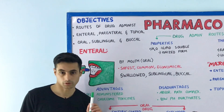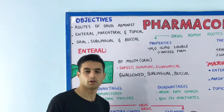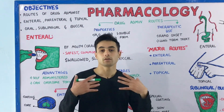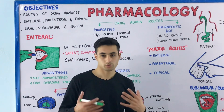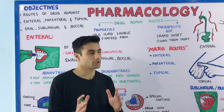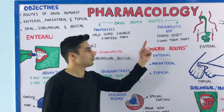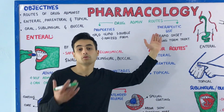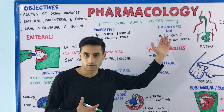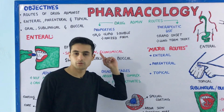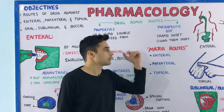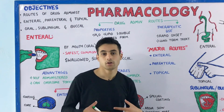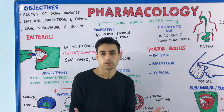When you are taking a drug into your body, the pathway through which you will take the medication is determined by two factors: the properties and the therapeutic use. The drug administration route will be determined by the properties of the drug and its therapeutic use.